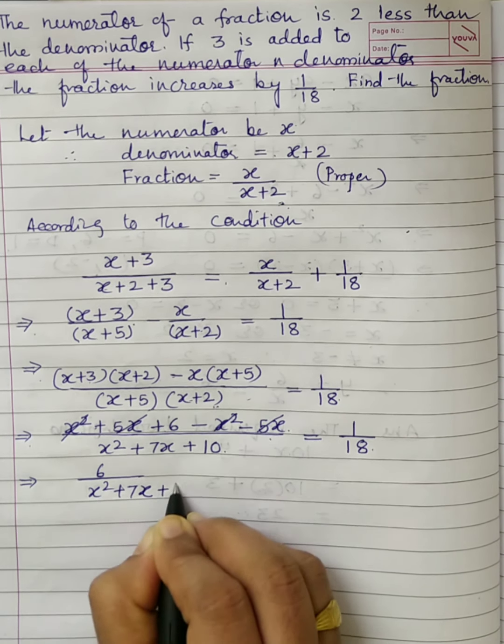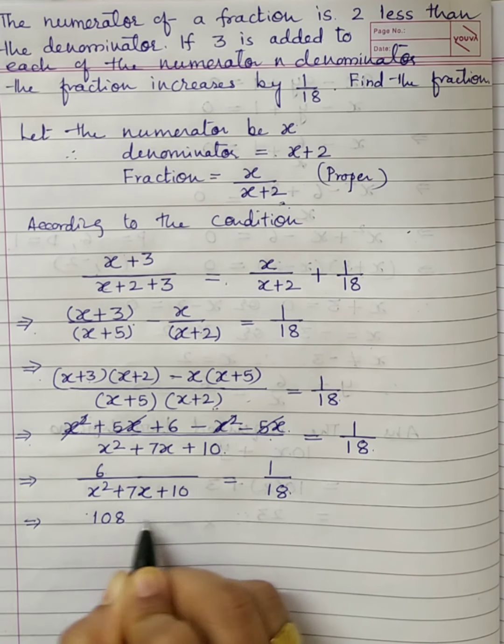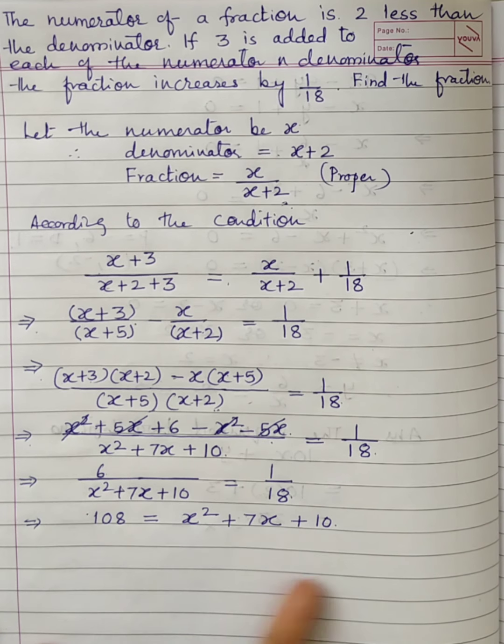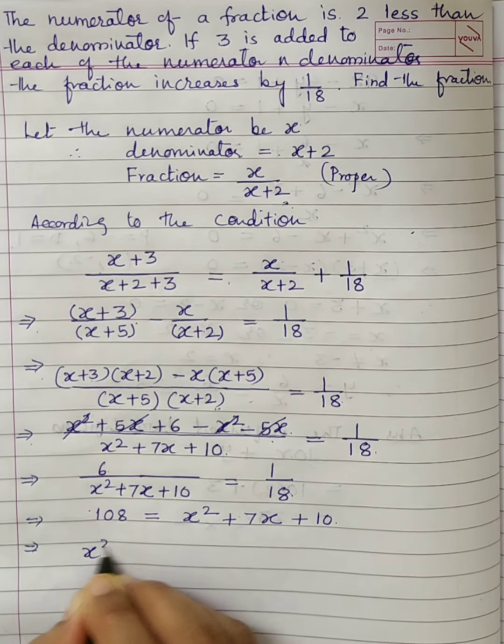Cross multiplying: 6 × 18 = x² + 7x + 10, so 108 = x² + 7x + 10. Writing in standard form by shifting 108 to the left side: x² + 7x + 10 - 108 = 0, which gives x² + 7x - 98 = 0.